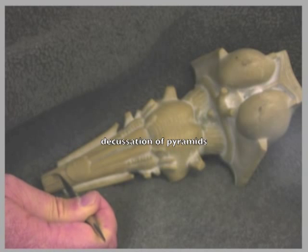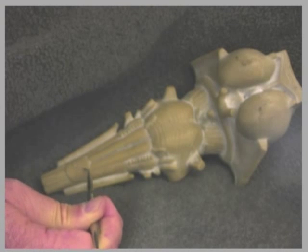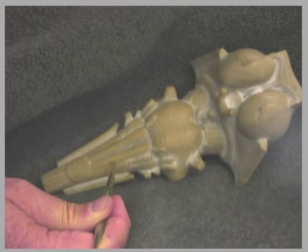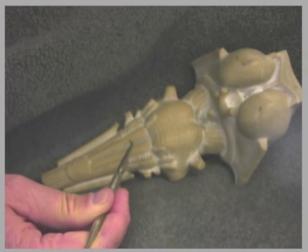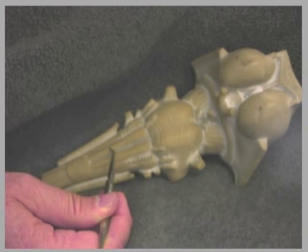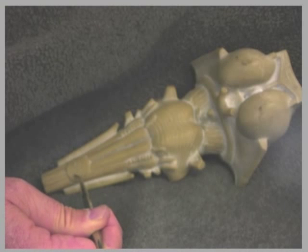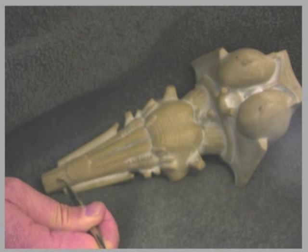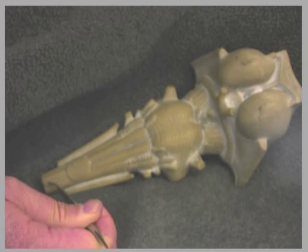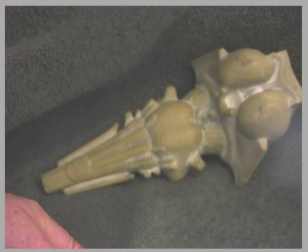Those axons cross in the pyramids in a process called decussation. For example, if we have axons traveling up this way, they would cross over here to this side. And if we have axons traveling this way, they would cross over here to this side. Again, this process is called decussation.